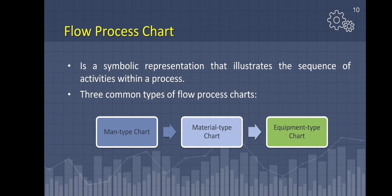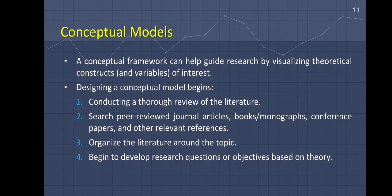Now we go to the different models. First is conceptual models. A conceptual framework can guide research by providing a visual representation of theoretical constructs and variables of interest. Designing a conceptual model begins first by conducting a comprehensive review of the literature. Second, look for peer-reviewed journal articles, books, monographs, conference papers, and other relevant sources. Third, arrange the literature according to the topic, and lastly, begin developing theory-based research questions or objectives.